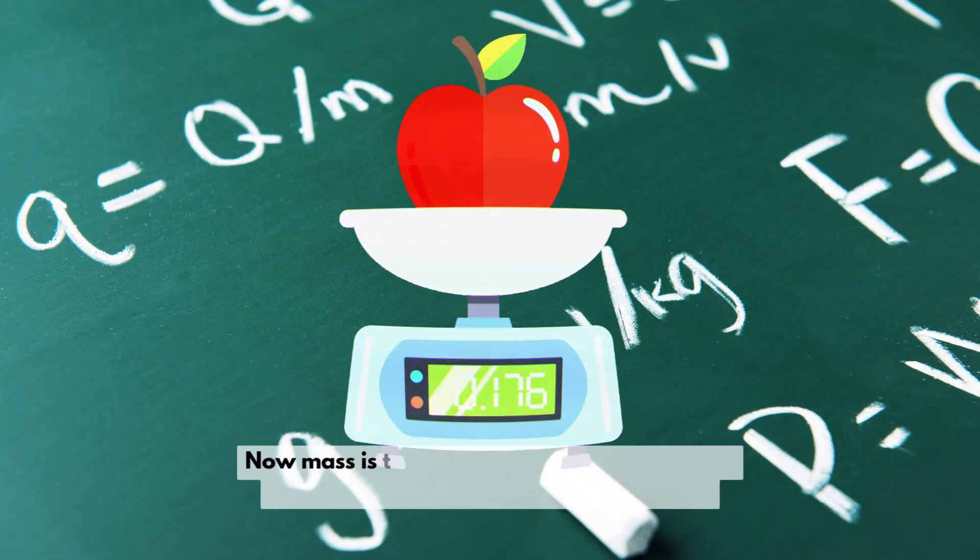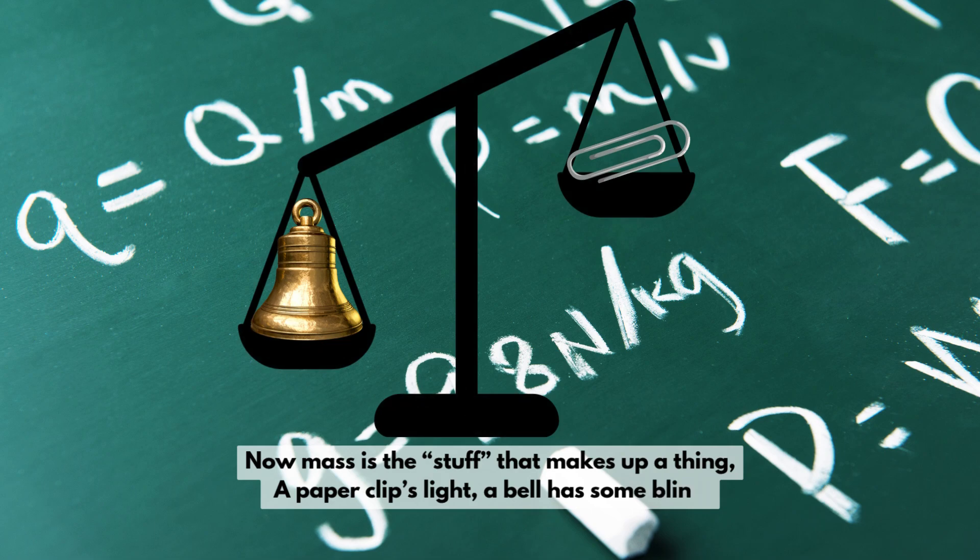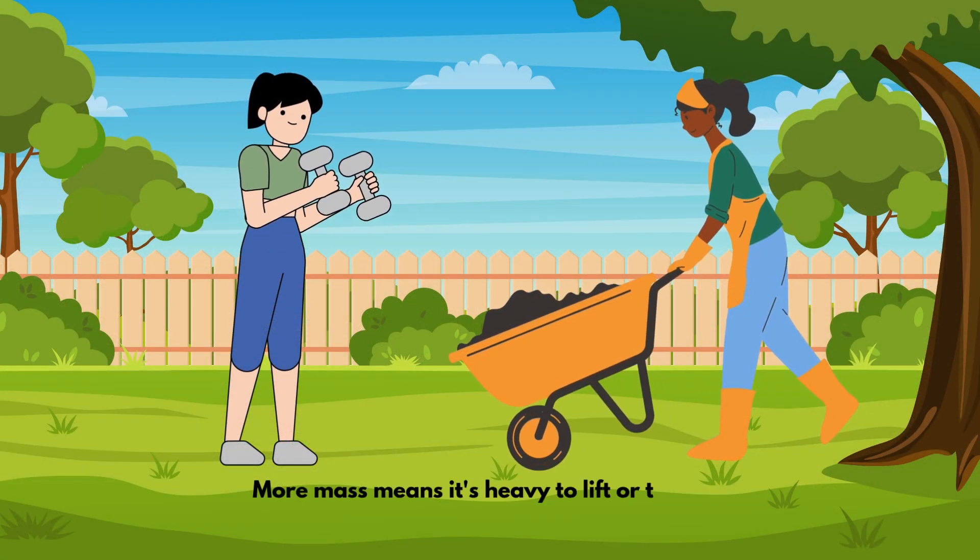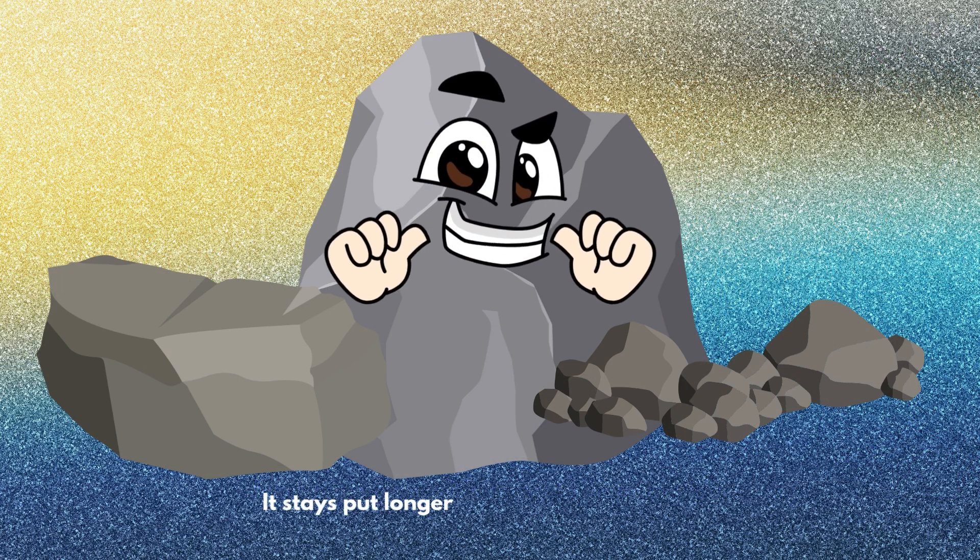Now mass is the stuff that makes up a thing. A paperclip's light, a bell has some bling. More mass means it's harder to lift or to slide. It stays put longer like a rock with pride.